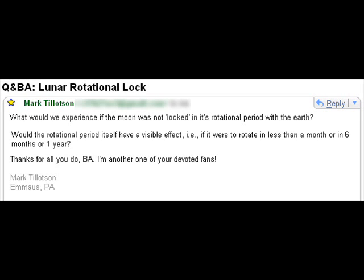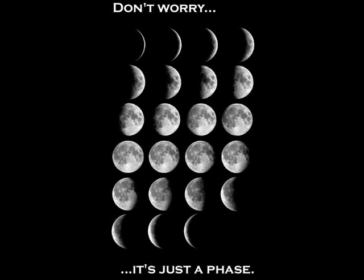Would the rotational period itself have a visible effect — if it were to rotate in less than a month, or in six months, or one year? This brings up a pet peeve of mine. When you go out and look at the Moon, you always see the same face of the Moon facing the Earth. You always see the same features. It doesn't matter what phase it's in. You could do this a thousand years ago, or a thousand years from now, and you will still see the same face of the Moon.